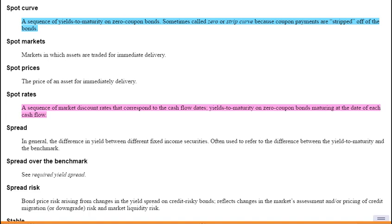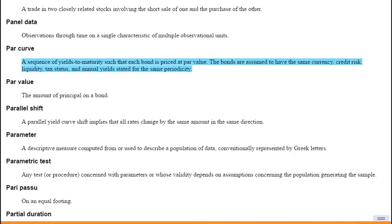When it says the word define, that's about definitions. If you want the definition of the spot curve, go into the glossary. The spot curve is a sequence of yields to maturity on zero-coupon bonds, sometimes called the zero or strip curve, because coupon payments are stripped off the bonds. The par curve is a sequence of yields to maturity such that each bond is priced at par value. The bonds are assumed to have the same currency, credit risk, liquidity, tax status, and annual yields stated for the same periodicity.